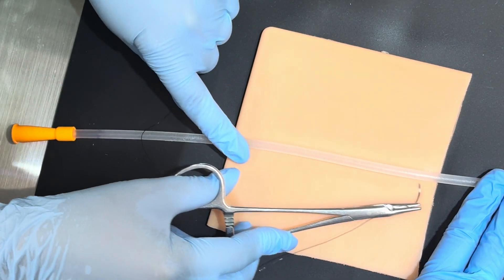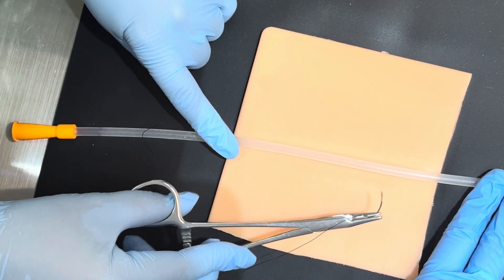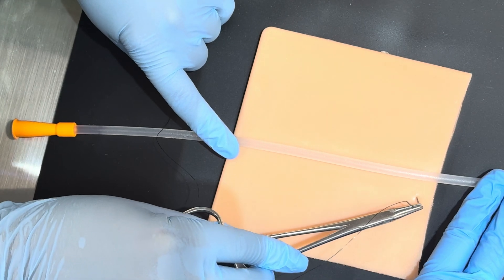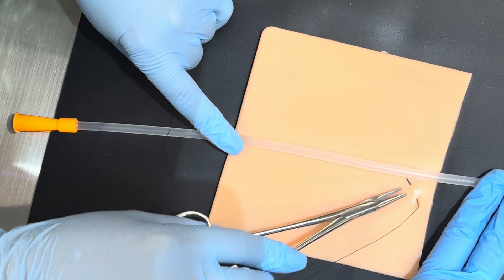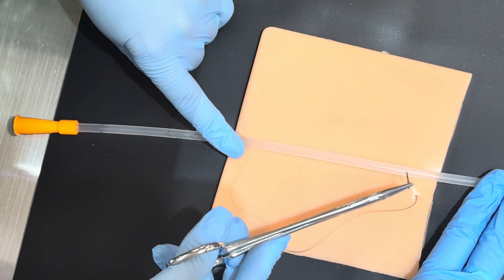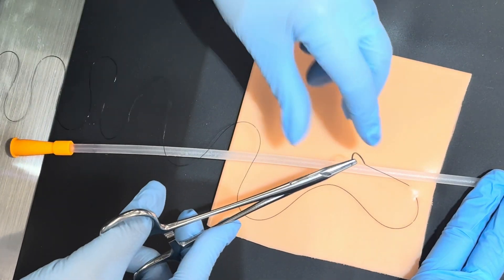This would be representative of the vulva or the prepuce. I can just simply take a full thickness skin bite of that tissue here so that this tube will be attached to the patient.